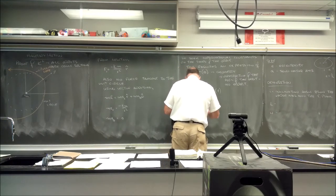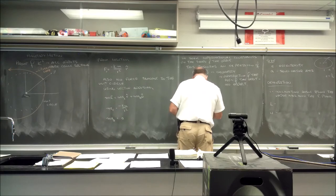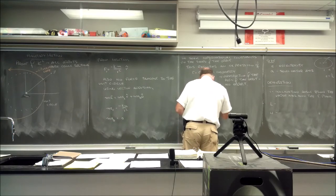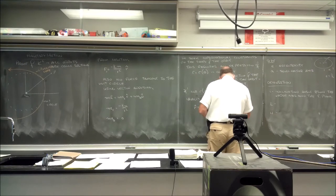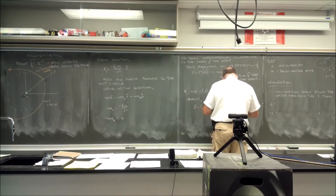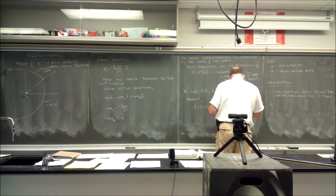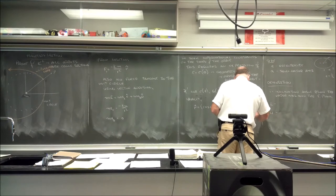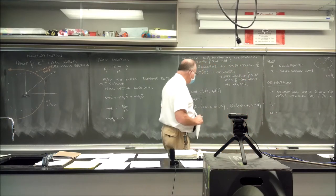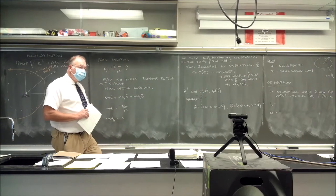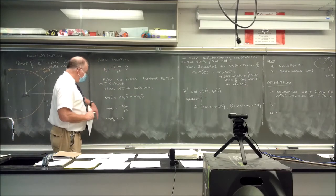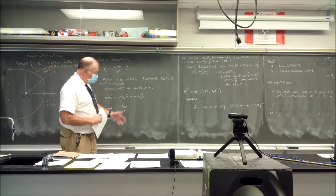Initially, r_hat equals (cos θ, sin θ), and θ_hat equals (−sin θ, cos θ). We already did this when we did circular motion — it's the same logic. You're rotating 90 degrees, which gives you the same result.